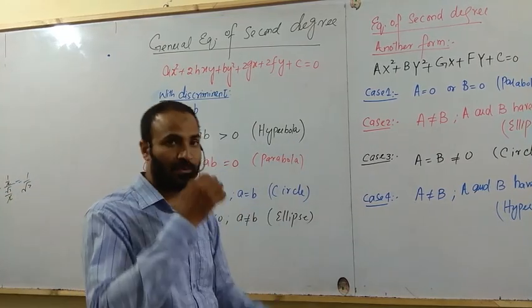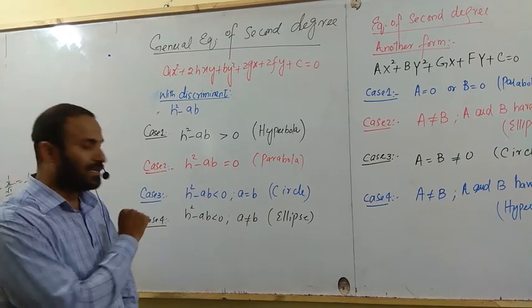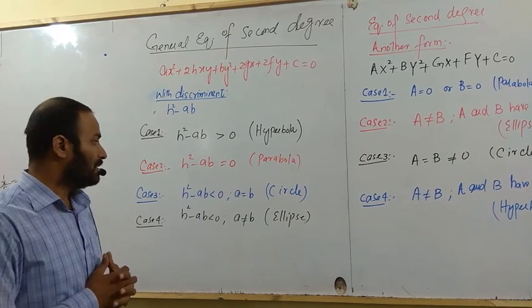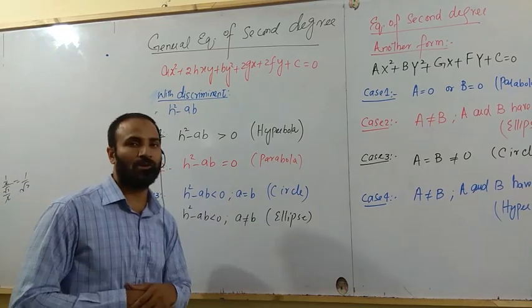If H² - AB equals zero, the equation represents a parabola. In the last case, if H² - AB is less than 0, then negative. But if A and B have the same sign, then you represent an ellipse. If A equals B, then it's a circle.